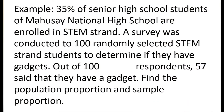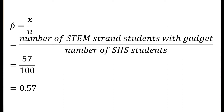Example: 35% of senior high school students of Mahusay National High School are enrolled in STEM Strand. A survey was conducted on 100 randomly selected STEM Strand students to determine if they have gadgets. Out of 100 respondents, 57 said that they have a gadget. Find the population proportion and sample proportion. The percentage of STEM Strand students represents the population proportion, so p equals 35% equals 0.35. The percentage representing those having gadgets is the sample proportion: p-hat equals x over n equals 57 over 100, so p-hat equals 0.57.